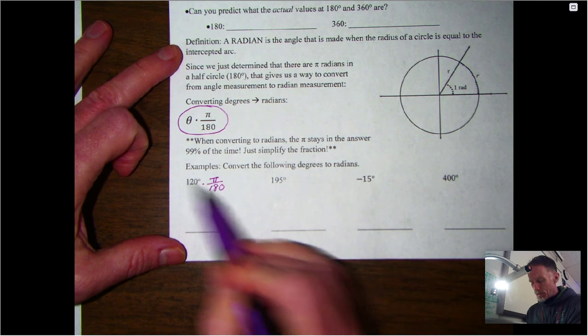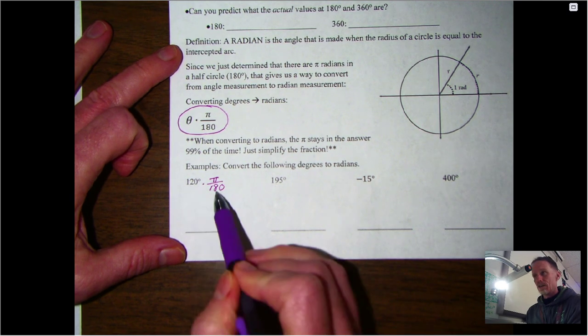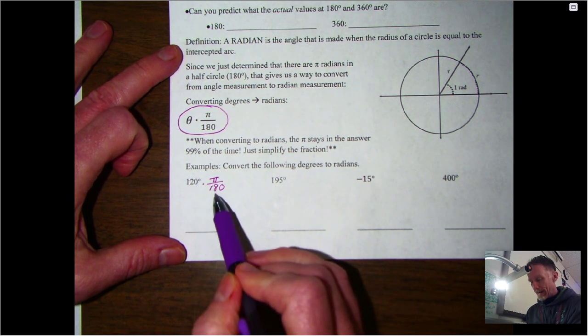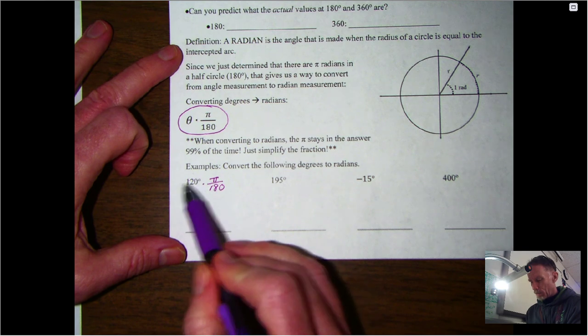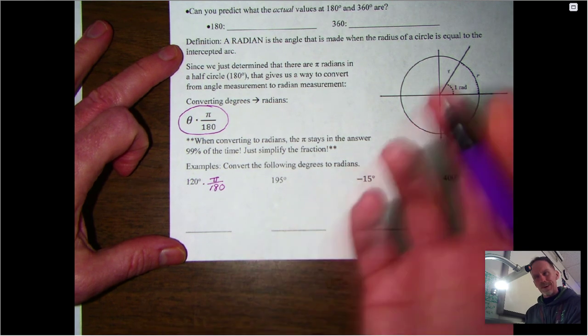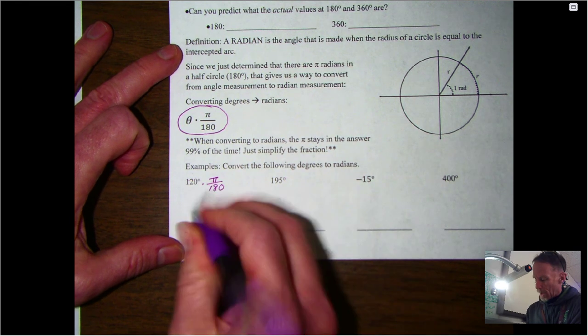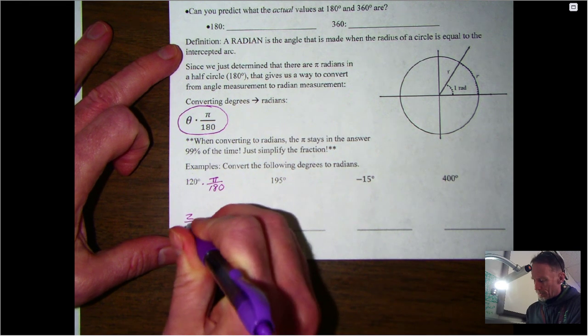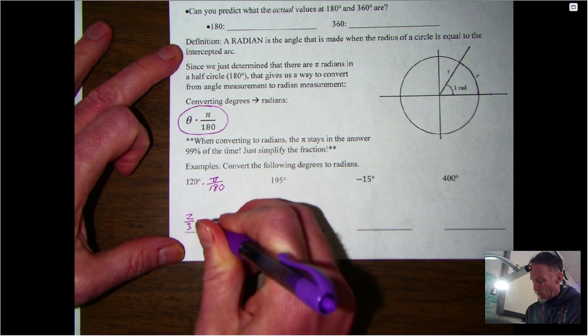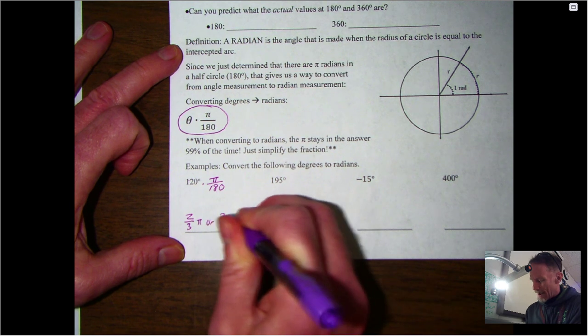If you simplify the fraction, it comes out to be two-thirds. So I would write that as either two-thirds π or 2π over 3. Most commonly you'll see it written like this, but either one of those would be correct.